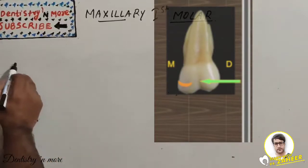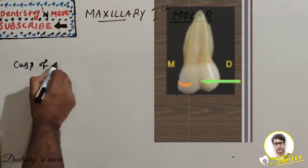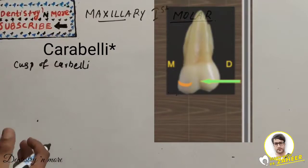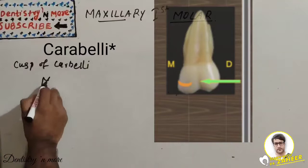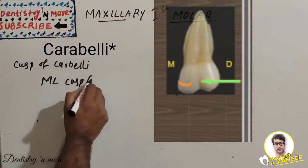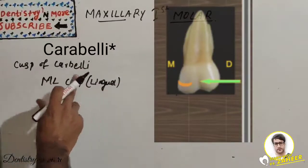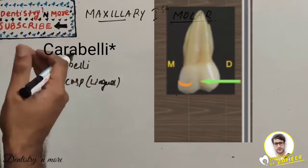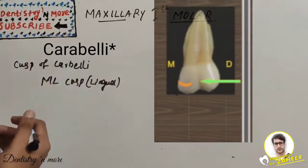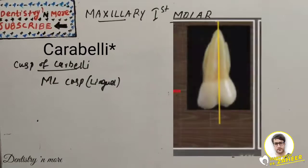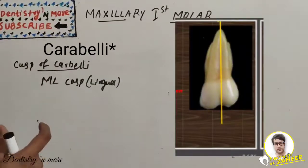The cusp of Carabelli is a very important short-note topic. It is seen on approximately sixty percent of cases on the lingual surface of the mesio-lingual cusp, situated about two millimeters cervical to the mesio-lingual cusp. There is also a lingual developmental groove present.